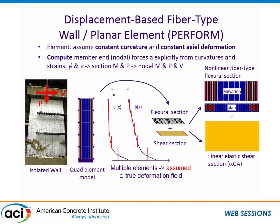Each section has a fiber-type flexural section with unconfined concrete fibers, confined concrete fibers, and steel fibers, with a linear or multi-linear shear section layered on. For a displacement-based element, the element assumes a curvature field and axial strain field, requiring multiple elements per height to represent the curvature field. This is essentially the same as a PERFORM-type model — instead of a line element, it's a four-node quadrilateral, with a linear elastic or slightly nonlinear shear model, needing multiple elements of height.